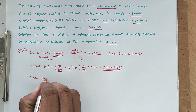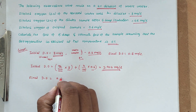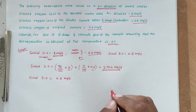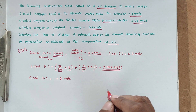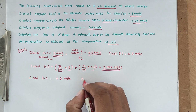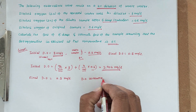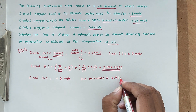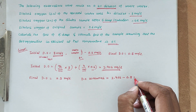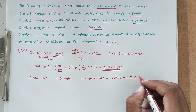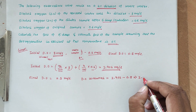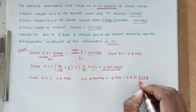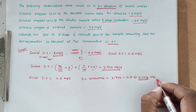The final dissolved oxygen is given as 0.8 mg/L. From that we can easily find out the DO consumed. DO consumed equals initial DO 2.904 minus final DO 0.8, which gives us approximately 2.104 mg/L. This is the DO consumed during the test.